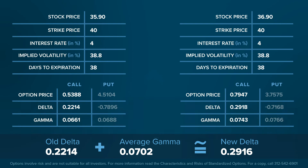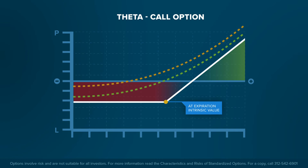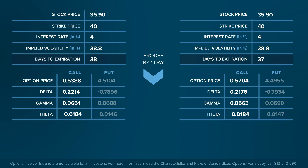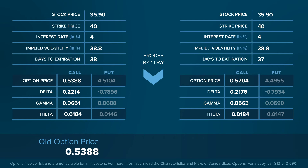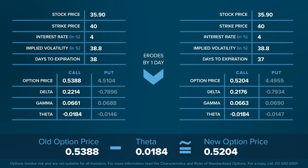Theta describes the relationship between time and the price of an option. Theta only impacts the extrinsic value of an option, because intrinsic value does not erode — it only moves with a change in the underlying asset price. As an option nears expiration, Theta will become increasingly negative. The closer an option is to expiration, the less time value — extrinsic value — remains. Theta measures the approximate decline in an option's premium due to the passage of time; in other words, it measures the rate at which an option's extrinsic value is declining. Change the calculator's model inputs and click Calculate to better understand the impact on Theta.